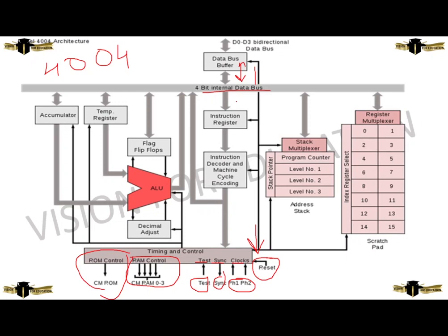The data is processed to the instruction register. The instruction register processes the data to the instruction decoder and machine cycling encoder, which encodes and decodes the data. The machine cycling process feeds back to the Intel 4-bit data bus, which gives the data to the user. The data is registered from the Intel 4-bit bus through the register multiplexer, also known as the scratch pad. The scratch pad consists of index register selectors.